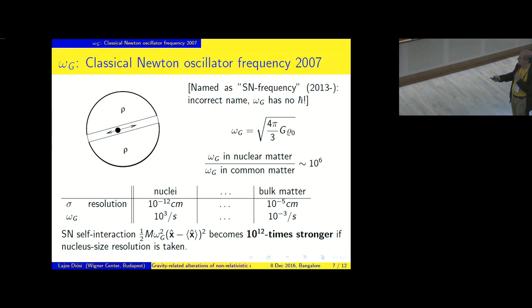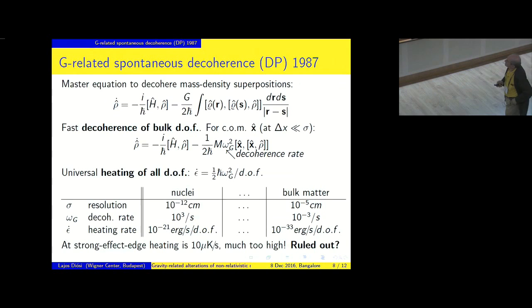But depending on our choice, the strength of this potential, this harmonic potential, can change over 12 orders of magnitude. For nuclear size resolution, this confining potential and the Schrodinger-Newton self-interaction is 10 to the 12 times stronger. And we have no handle yet to guess which one is closer to reality.